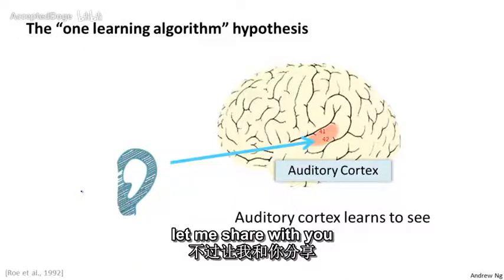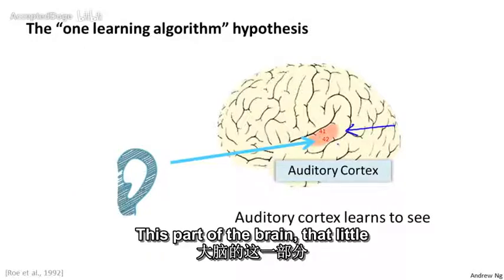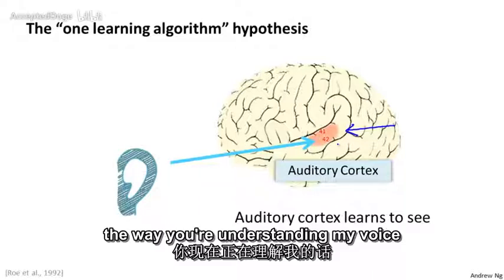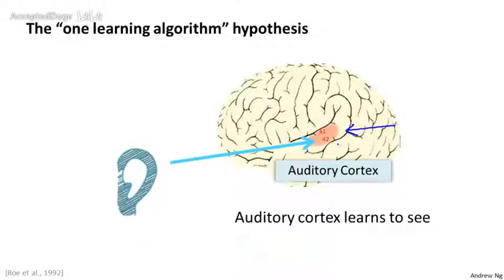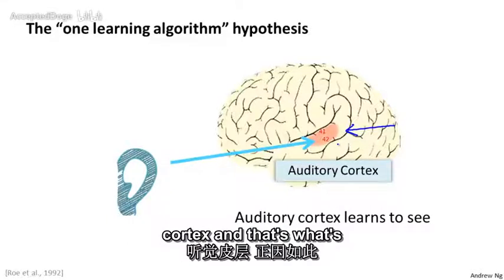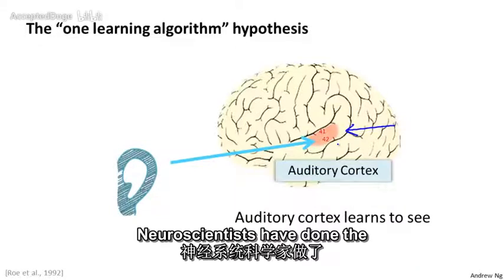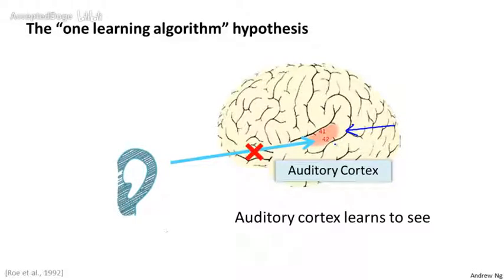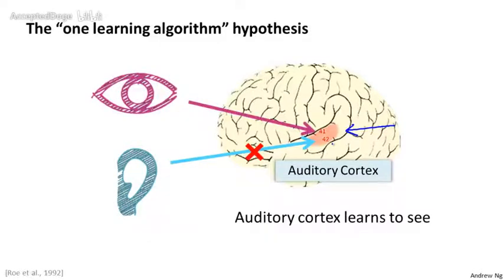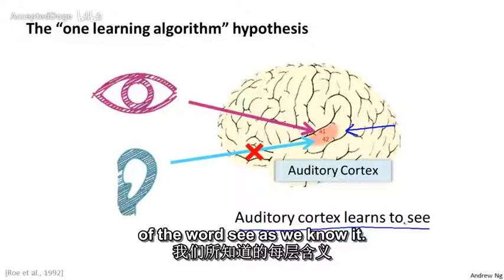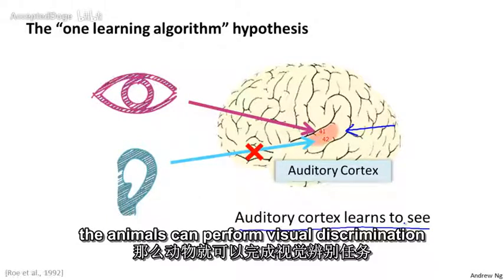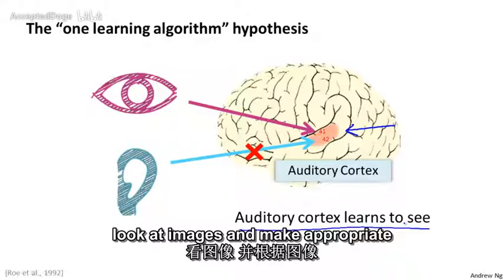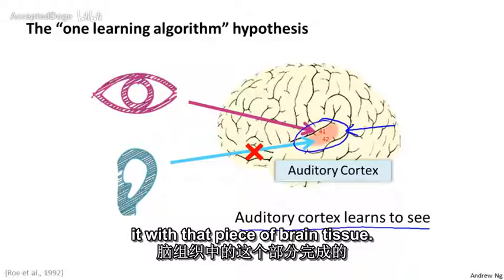This is just a hypothesis, but here's some of the evidence. This part of the brain — that little red part — is your auditory cortex. The way you understand my voice now is that your ear takes the sound signal and routes it to your auditory cortex. Neuroscientists have done fascinating experiments where you cut the wire from the ears to the auditory cortex and rewire an animal's brain so that the signal from the optic nerve gets routed to the auditory cortex. If you do this, the auditory cortex will learn to see, and the animals can perform visual discrimination tasks and make appropriate decisions based on images.